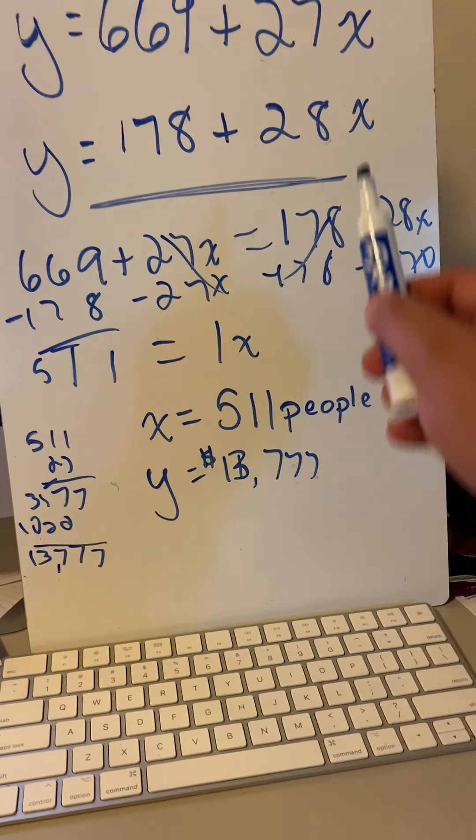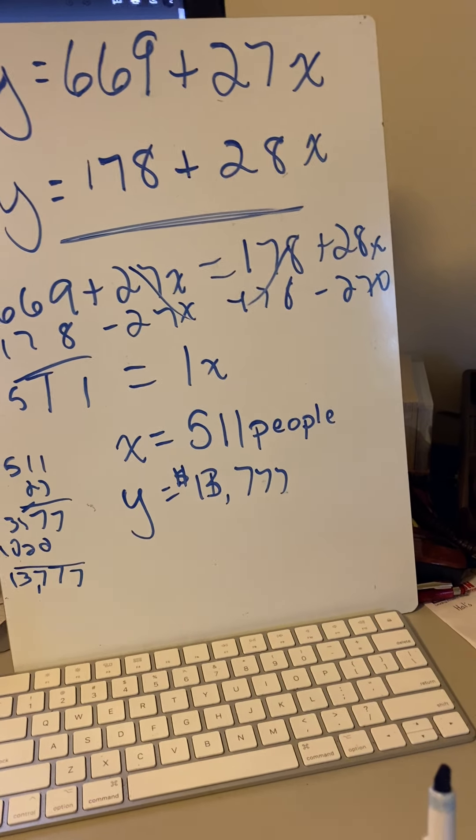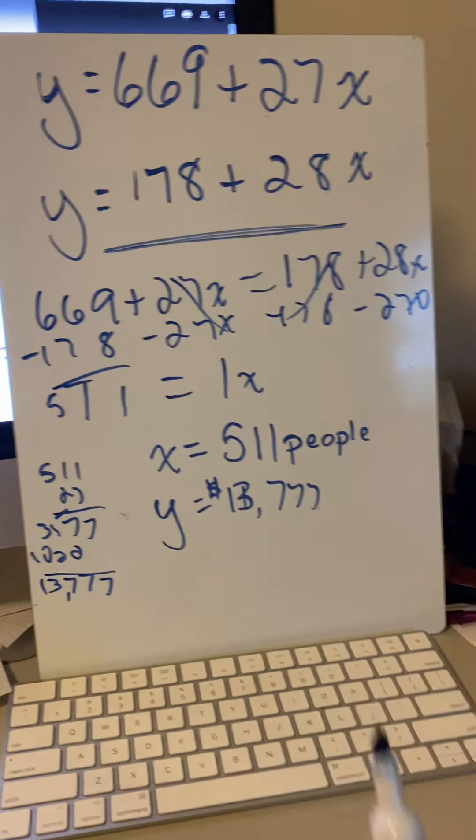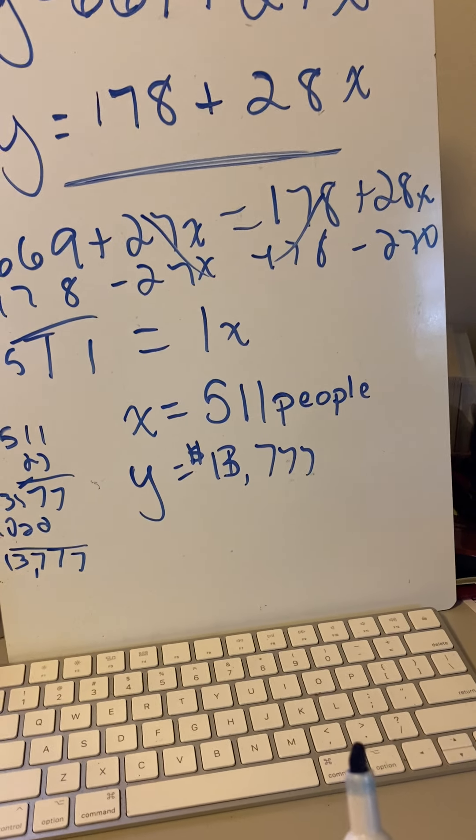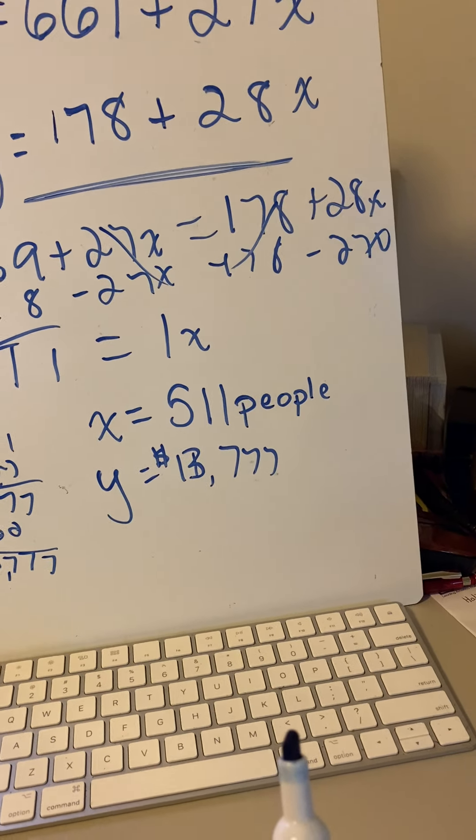How do I want to test that? Yes, you can put 511 into the 28. 511 times 28 plus 178. Trust me, it equals $13,777.